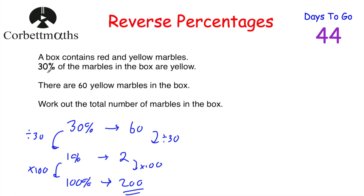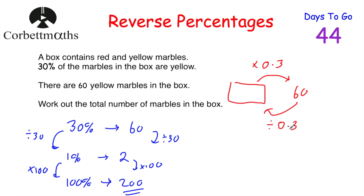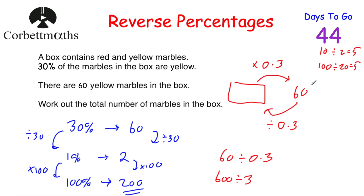The second approach: we know that 30% of the total number of marbles equals 60. Multiplying a number by 0.3 gives 30% of it. So if we multiply the total by 0.3, the answer is 60. Going backwards means dividing by 0.3. To divide 60 by 0.3, multiply both numbers by 10 to get 600 divided by 3, which equals 200. So 60 divided by 0.3 also equals 200 — there were 200 marbles.